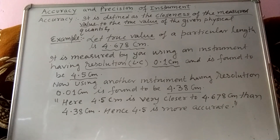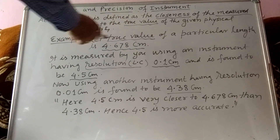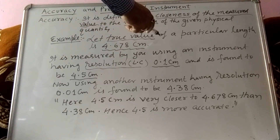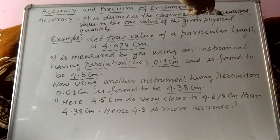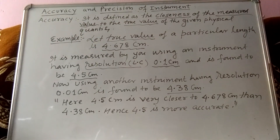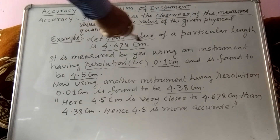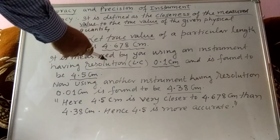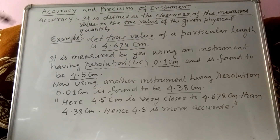Let me take an example. Let the true value — the accurate value measured by the manufacturer — of a particular length be 4.678 centimeters. Now you are measuring this length using an instrument having a resolution, meaning least count, of 0.1 centimeter, and it is found to be 4.5 centimeters.